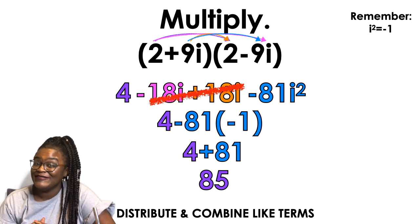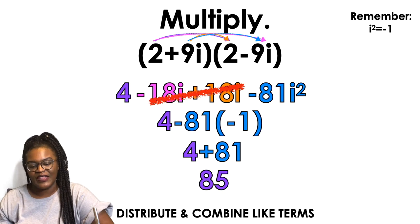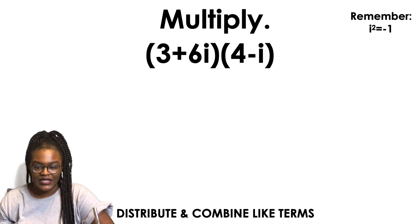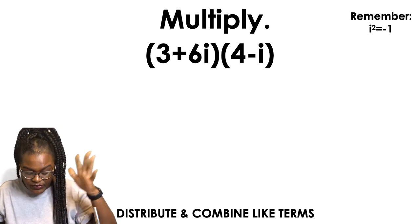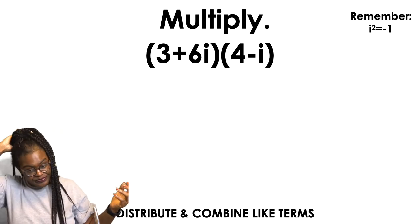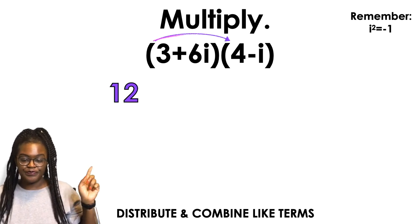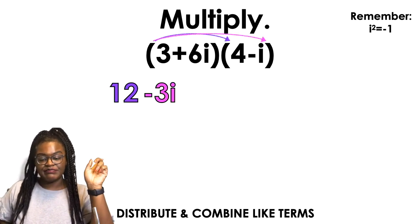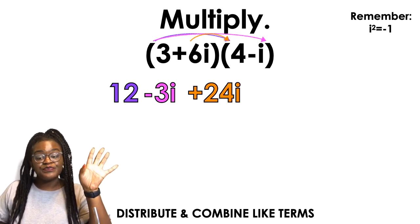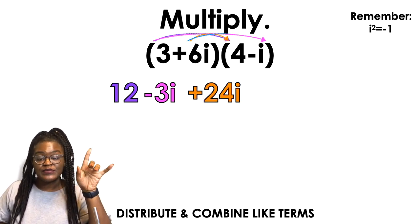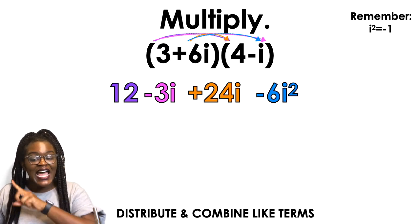Yeah. You see me? You see me? All right. One more example. Okay. You should try to see if you can do this one on your own. But if you... Whatever. Pause the video. Something. Okay. 3 times 4, 12. 3 times negative i, negative 3i. 6i times 4, positive 24i. 6i times negative i is negative 6i squared.